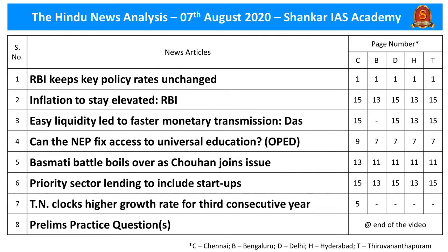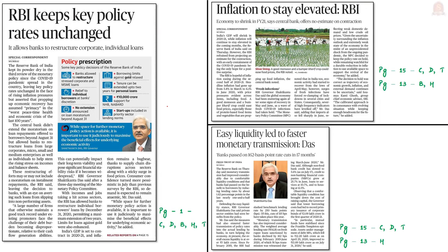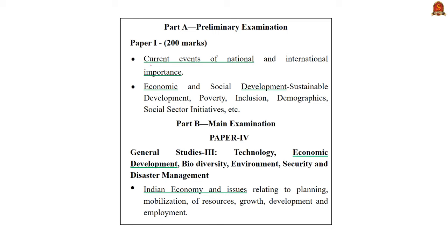Let's begin with the first news article analysis. These news articles are with reference to bi-monthly monetary policy statement 2020-21. The policy statement was published yesterday, that is on 6th August 2020, by the Reserve Bank of India after the three-day meeting of the Monetary Policy Committee. In this context, let us discuss about monetary policy, how RBI qualitatively controls credit flow to handle inflation, and also major announcements mentioned in these news articles.